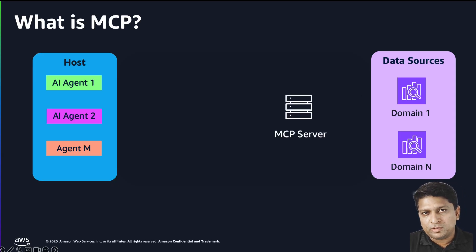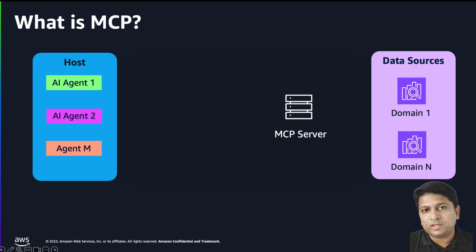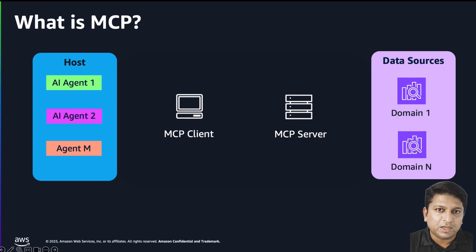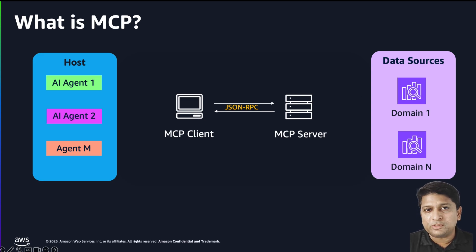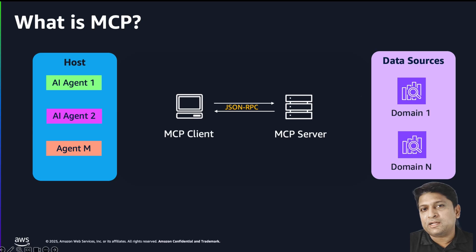This centralized piece is mainly made of an MCP server, which is a lightweight program written to invoke the REST APIs of Amazon OpenSearch Service domain. On the other hand, it has an MCP client which works as an adapter for AI systems to invoke the functionalities of the MCP server. Both the client and the server interact on the JSON-RPC protocol, which has its own advantages.